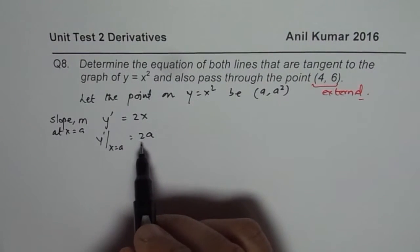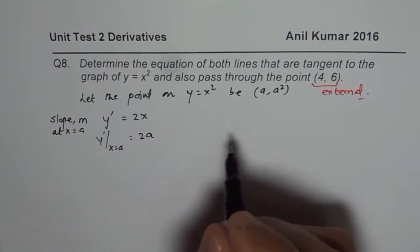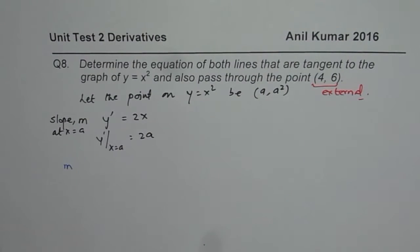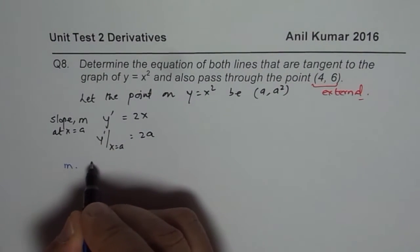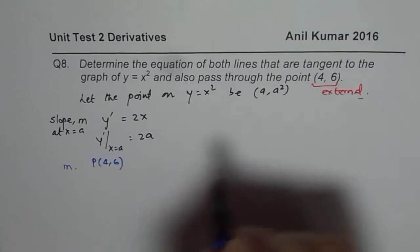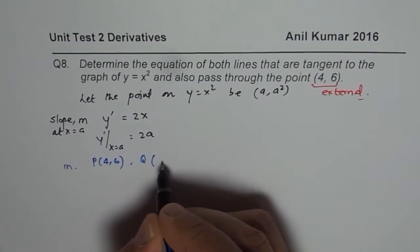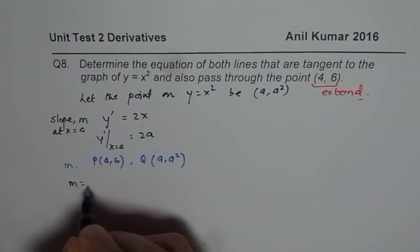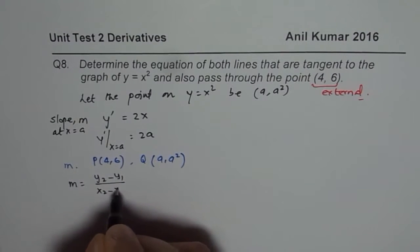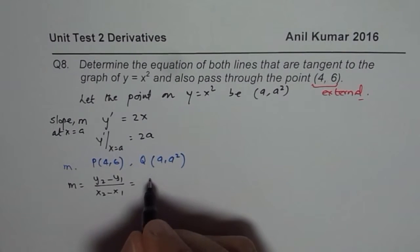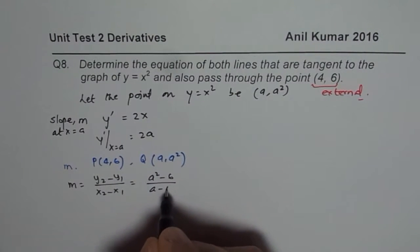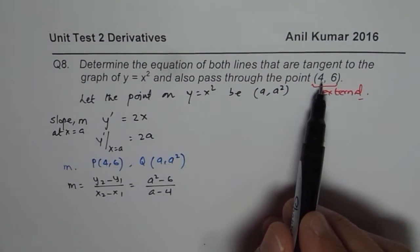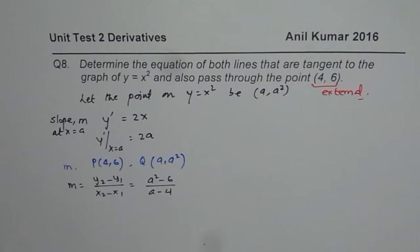Since this tangent line also passes through the point (4, 6), we can also find the slope M between two points: one point is (4, 6), which is given, and the other point we'll call Q, which is (A, A²). So the slope is (y2 - y1) / (x2 - x1), which gives us (A² - 6) / (A - 4). This becomes the slope of any tangent line from point (4, 6) to a general point on the function.